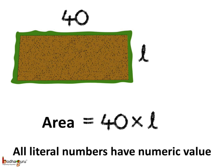Mahanath Ram bought a plot for gardening. Its length was 40 meters. Let's denote the width of the plot by a variable L. So we can say the area of the plot was 40 multiplied by L. Here L is a literal number which refers to an unknown number. So we should treat it as a number.